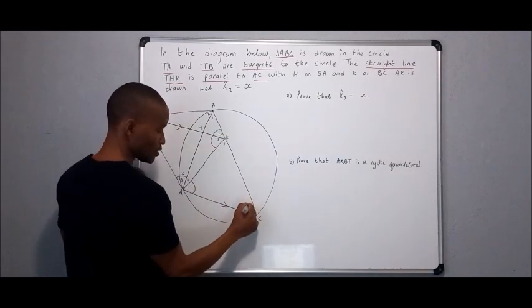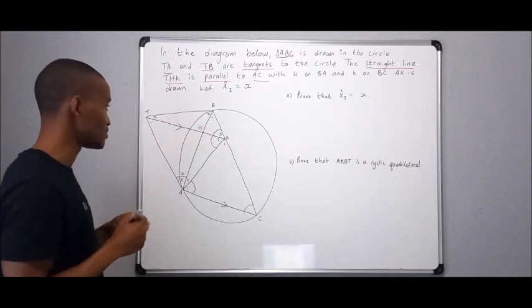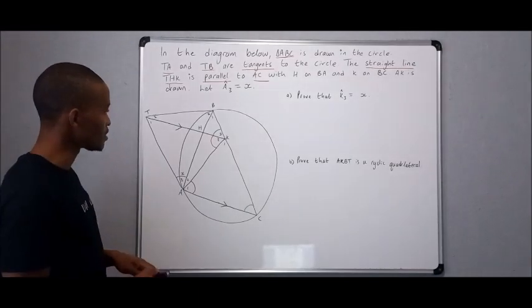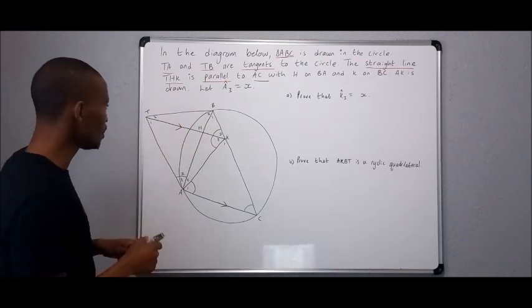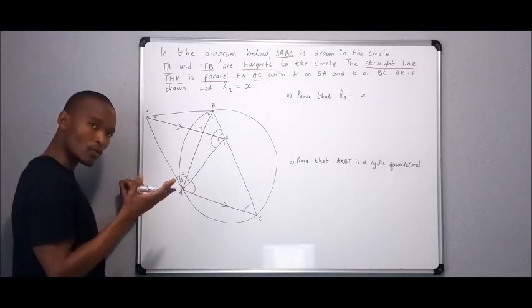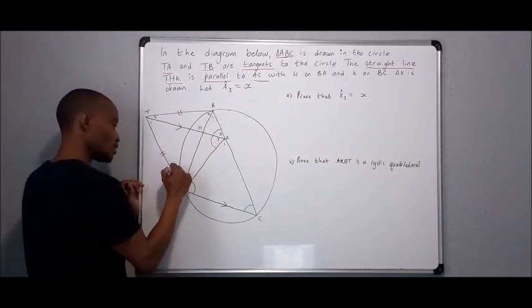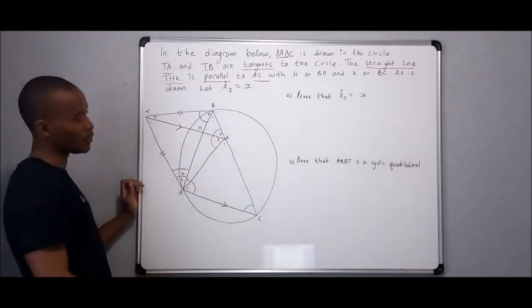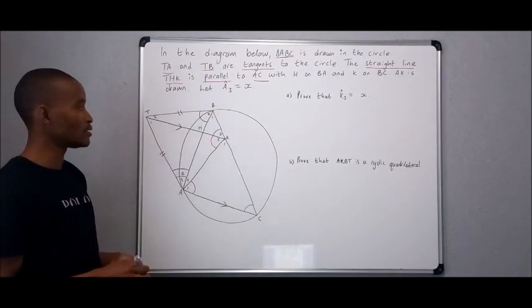And K1 and K2 plus angle C will be your co-interior angles, they are supplementary. And what can we say about these ones? K3 and angle C, what can you say about them? Yes, I hear corresponding angles. Good. And tangents now.